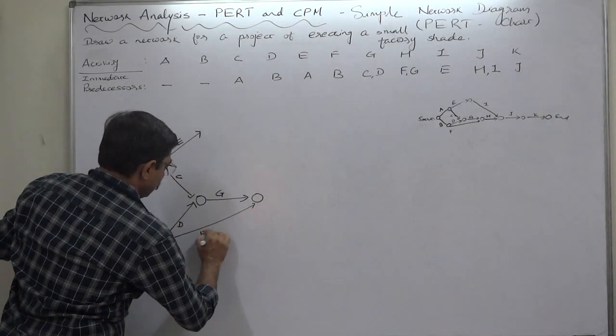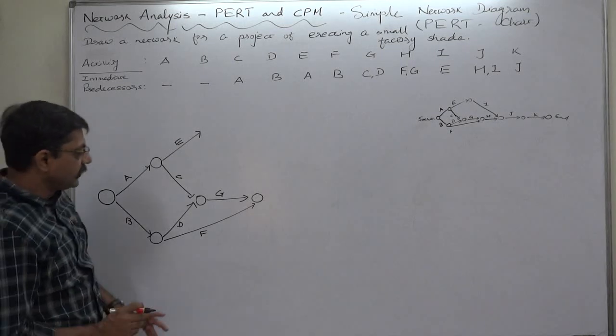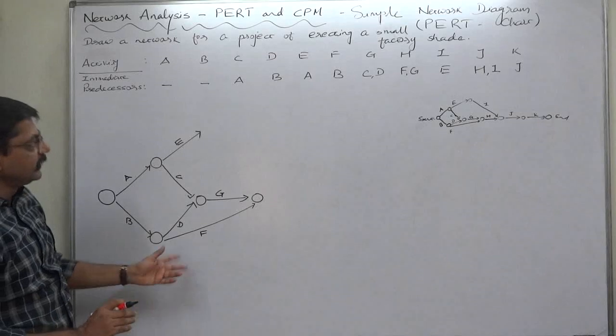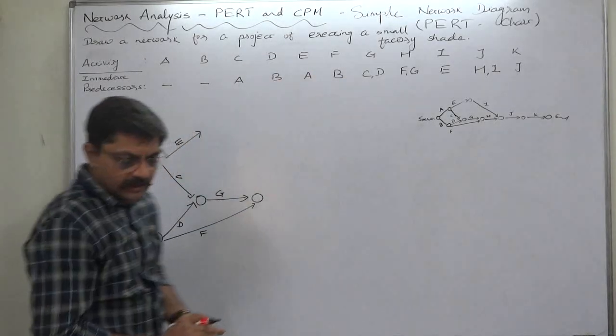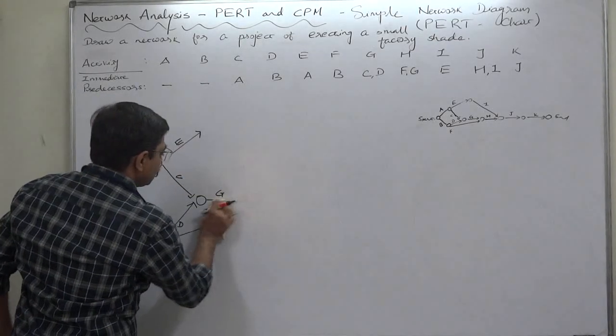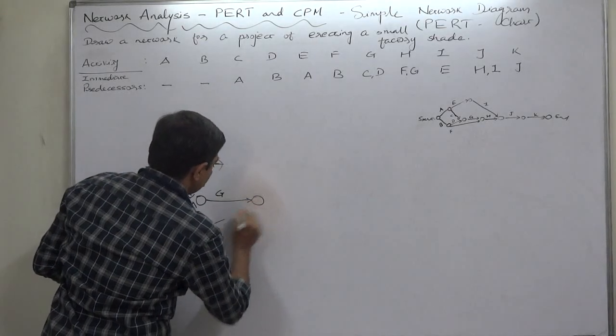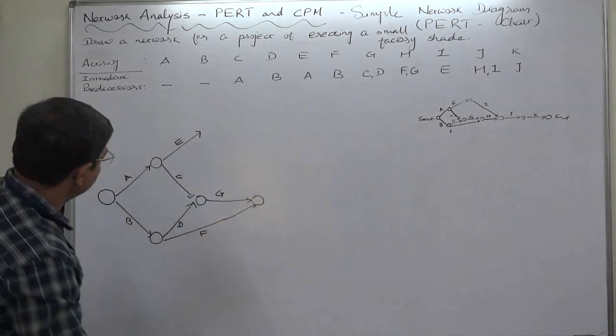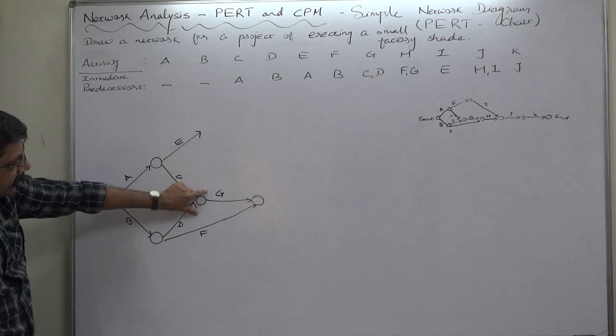So it is not compulsory to draw F first and G in order. It is not compulsory to maintain the alphabetical order—we can go according to our convenience. Yes, I am just changing the direction. This is a merge event, this is an example of burst event, this is also an example of merge event.